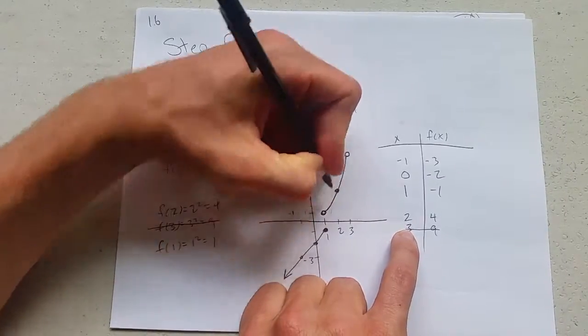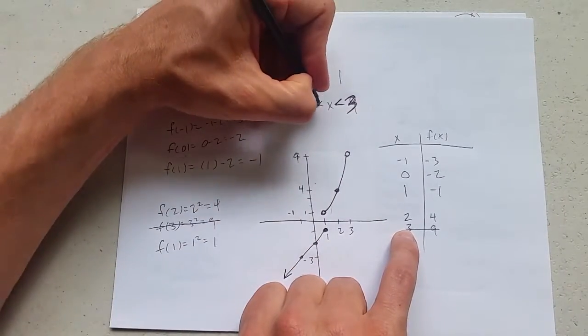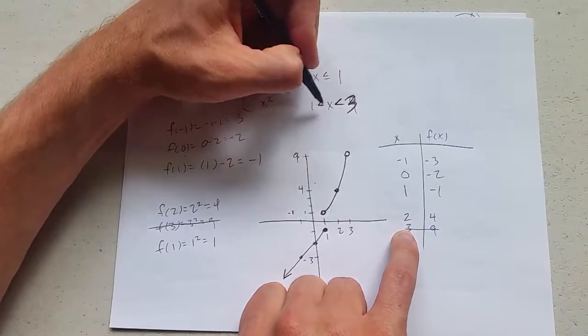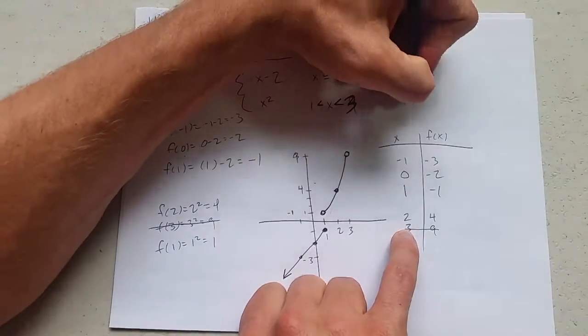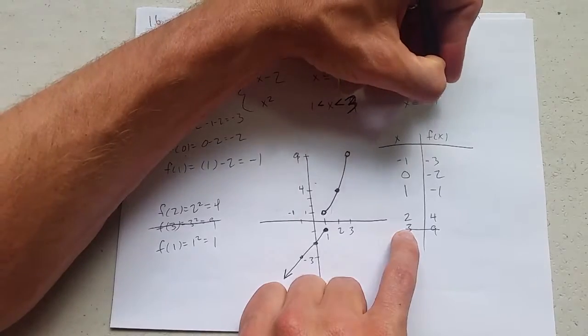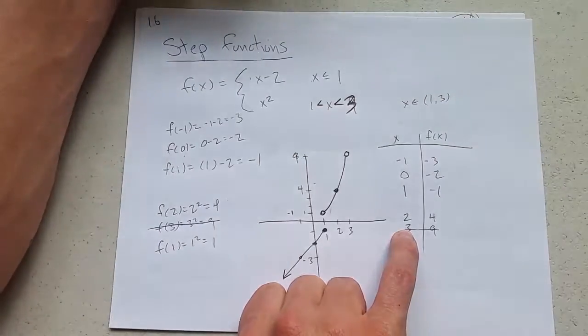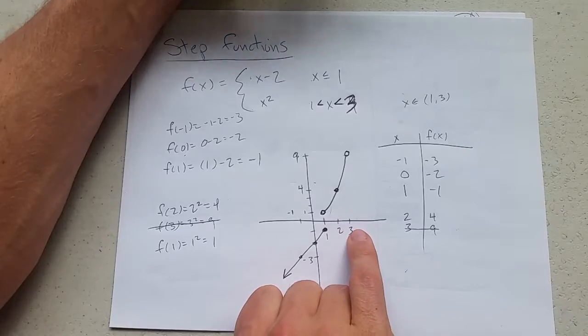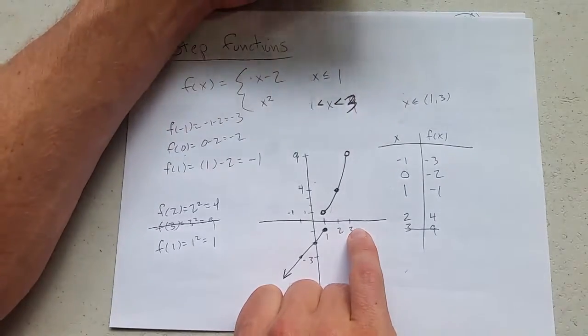I do not include either endpoint because I do not have equals here. This is an open interval. If I wrote it in interval notation, it would look like this. X is in the interval 1 to 3. So from 1 to 3, but do not include 1 or 3.